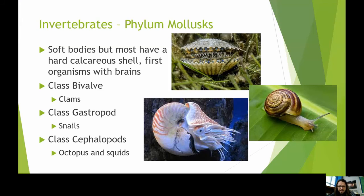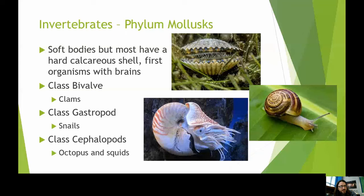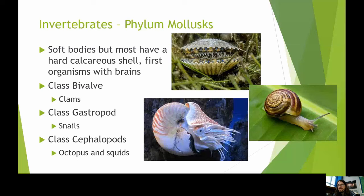That covers mollusks. Before moving to arthropods, there are many more types of invertebrates I haven't covered. Invertebrates are incredibly diverse. Other big categories include worms — roundworms, flatworms, segmented worms — and echinoderms like starfish, as well as tunicates like sea squirts. I just covered the main ones here.